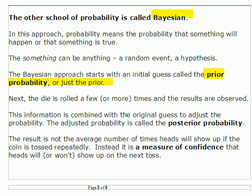Here's the next step in Bayesian analysis. The die is rolled a few more times, or maybe even one time, and you look at the results. Then you combine, by various rules, your prior probability and the new data, and you adjust your probability based on what you saw. This is now called the posterior probability — it's like an updated guess as to what's going to happen. And that is what Bayesian statistics gives you.